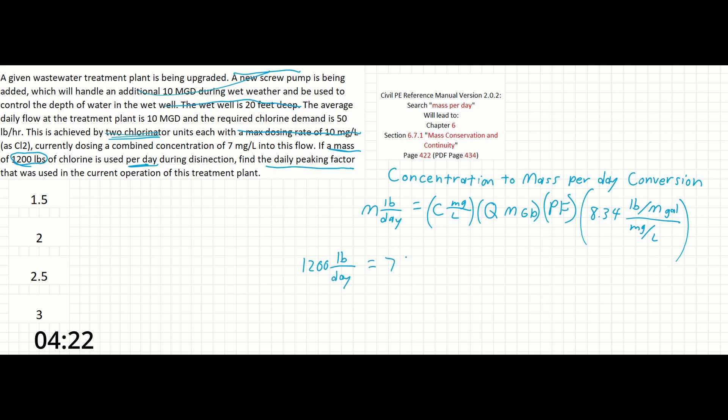Our concentration of chlorine is given as 7 milligrams per liter. Our flow here is going to be given as the average daily flow of 10 million gallons per day. We are looking for our peaking factor, and we have our conversion.